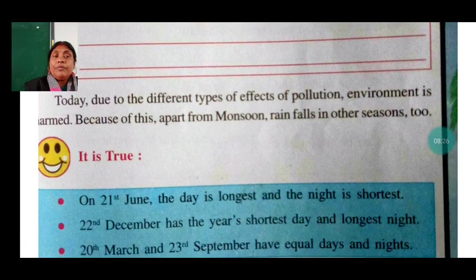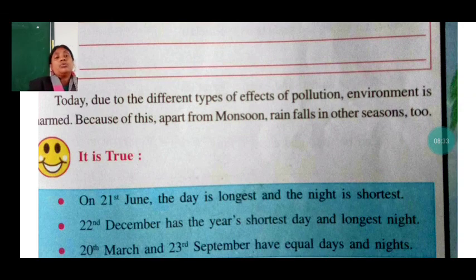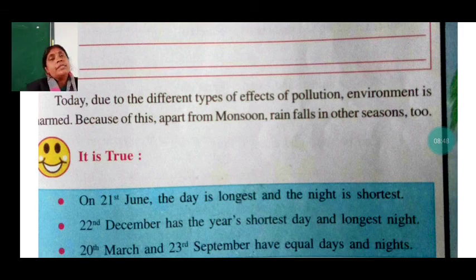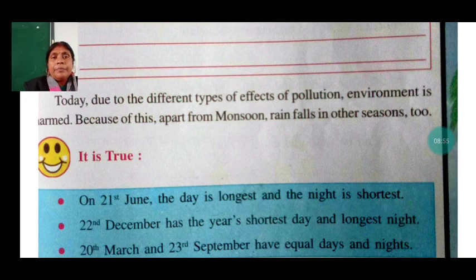Today, due to different types of pollution, our environment is harmed. Because of that, rainfall now occurs in other seasons too, not just the monsoon. Due to this pollution, our climate is changing day by day — for example, it rains even in winter now.